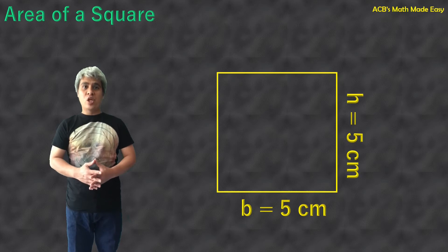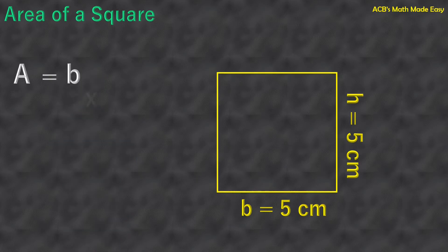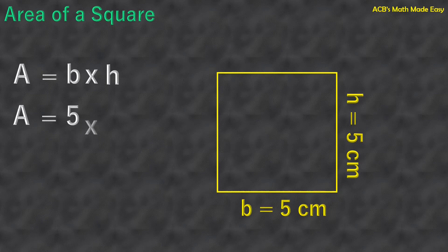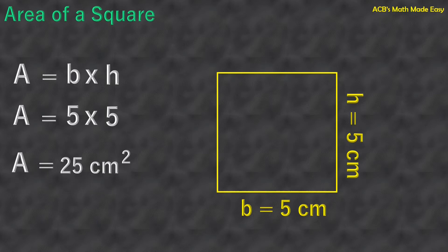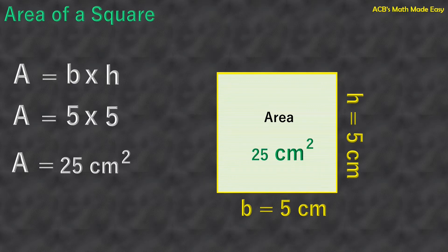But a square has 4 equal sides, so this is the formula. Area equals B, which is the base, and H, which is the height. So, area equals 5 cm times 5 cm. Area of a square equals 25 cm². This is the area of the square whose sides are 5 cm — 25 cm².